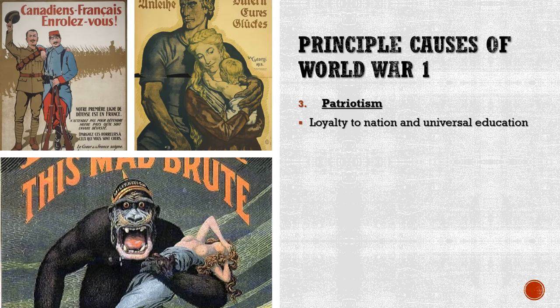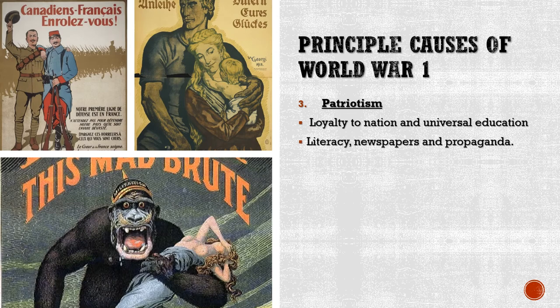Tied to nationalism is patriotism — one's loyalty to your nation — which is at a real high point by the late 19th and early 20th century. People are much more involved in the political life of their countries than ever before. By the late 19th century, most men can vote in elections. Many countries had adopted universal education, so all kids were going to school learning the same things. Widespread literacy, newspapers, and propaganda reinforce the idea that we're all in it together and that only together as a nation can we defeat the enemy.